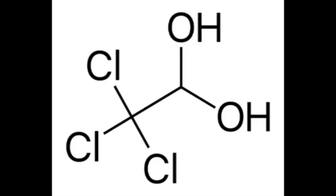Chloral hydrate is an organic compound with the formula C2H3Cl3O2. It is a colorless solid with limited use as a sedative and hypnotic pharmaceutical drug. It is also a useful laboratory chemical reagent and precursor. It is derived from chloral, trichloroacetaldehyde, by the addition of one equivalent of water.